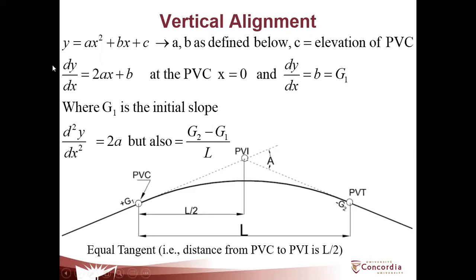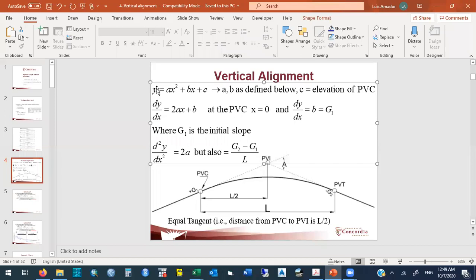There is one fundamental equation shown here — the equation of the parabola — which is how we define the vertical alignment. This equation has two key characteristics: the coefficient 'a' which accompanies x-squared, and 'b' which accompanies x. The constant 'c' is just a constant. If we take the first derivative dy/dx, it will be 2ax plus b, which represents the slope.